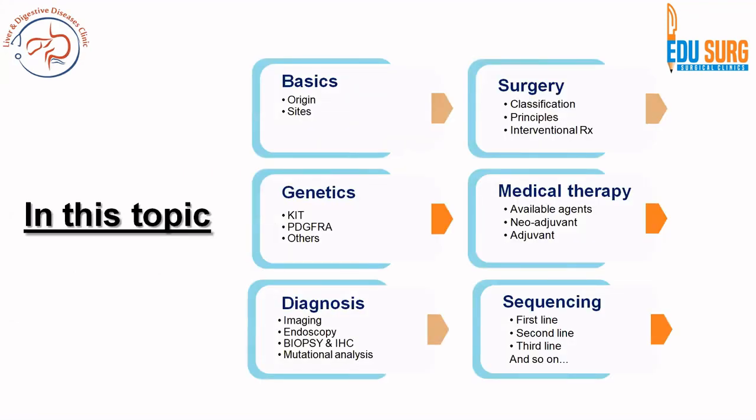Over these three videos, we have covered very important practical points about sequencing of therapies and multiple choice question topics such as Carney-Stratakis syndrome in the first part, diagnosis, IHC, mutational analysis, and therapy sequencing based on genetic analysis in this part. I hope this series helps you in understanding GIST. If you have not seen the previous two parts, please do have a look. Thank you.